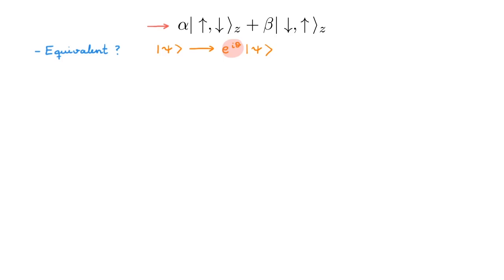If we do a second experiment, and we measure Sx for both particles, what is the probability that we obtain plus h-bar over 2 for both particles?